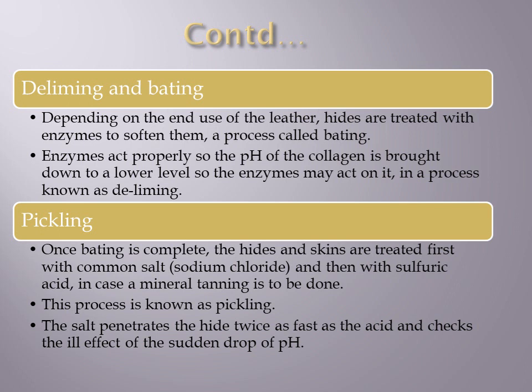The next step is deliming and batting. Depending upon the use of leather and what characteristics have to be brought into it, the hides are given an enzymatic treatment to soften them, which is termed as batting. Enzymes act properly at low pH, but the earlier liming treatment used calcium hydroxide, which is basic, so the pH was high. The lime is therefore removed first — that process of removal of lime is termed as deliming — to bring the pH down before using the enzymes.